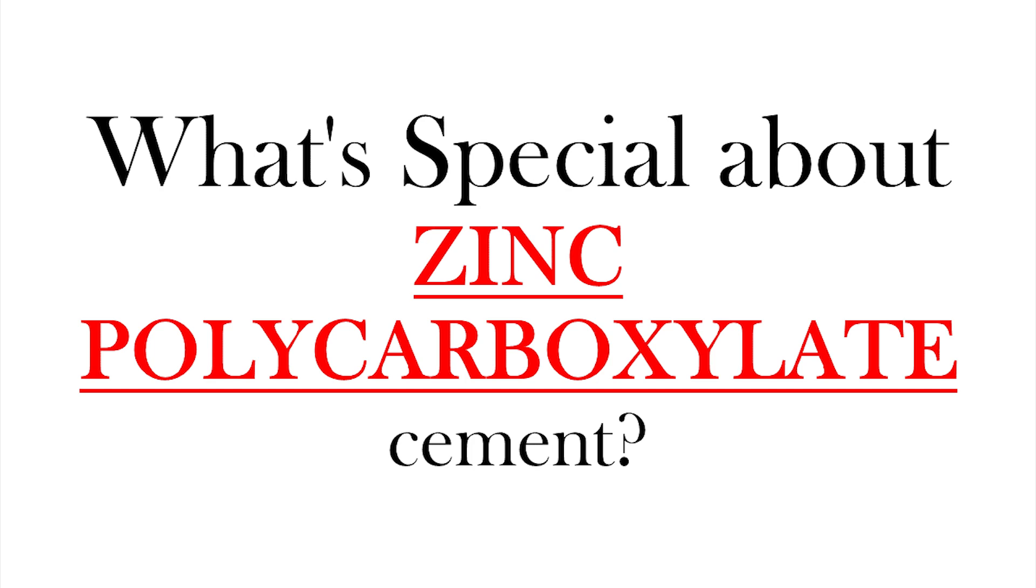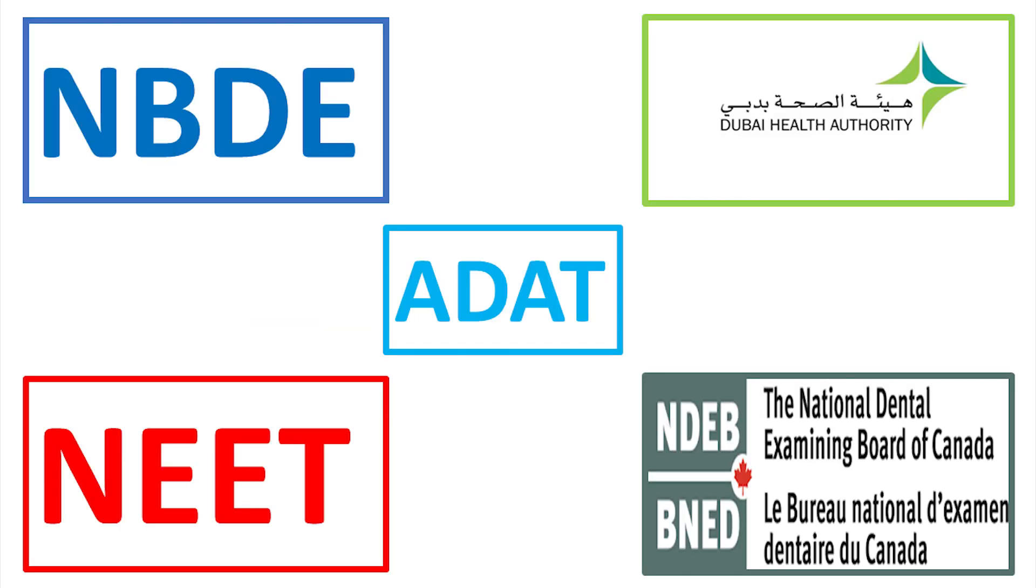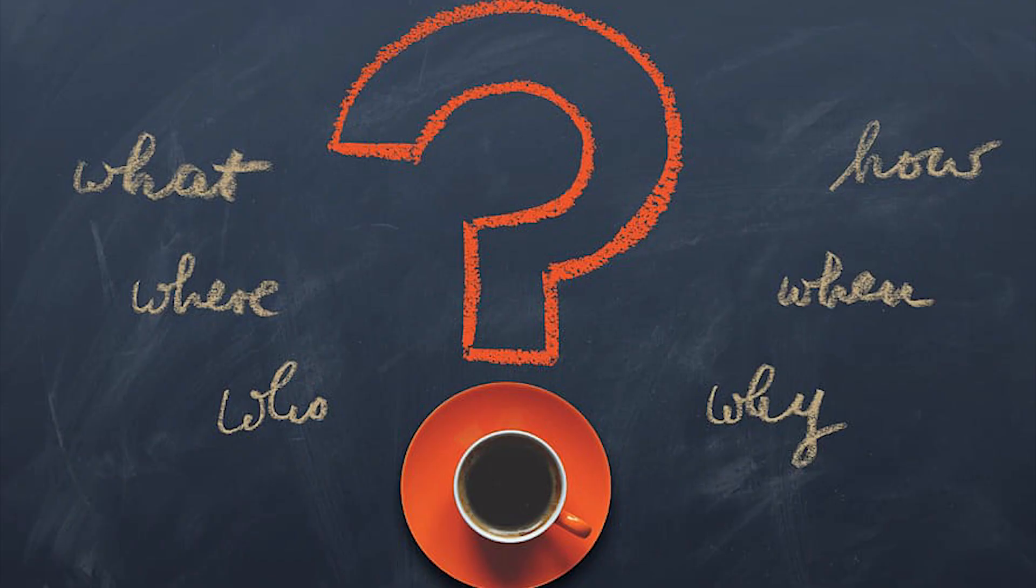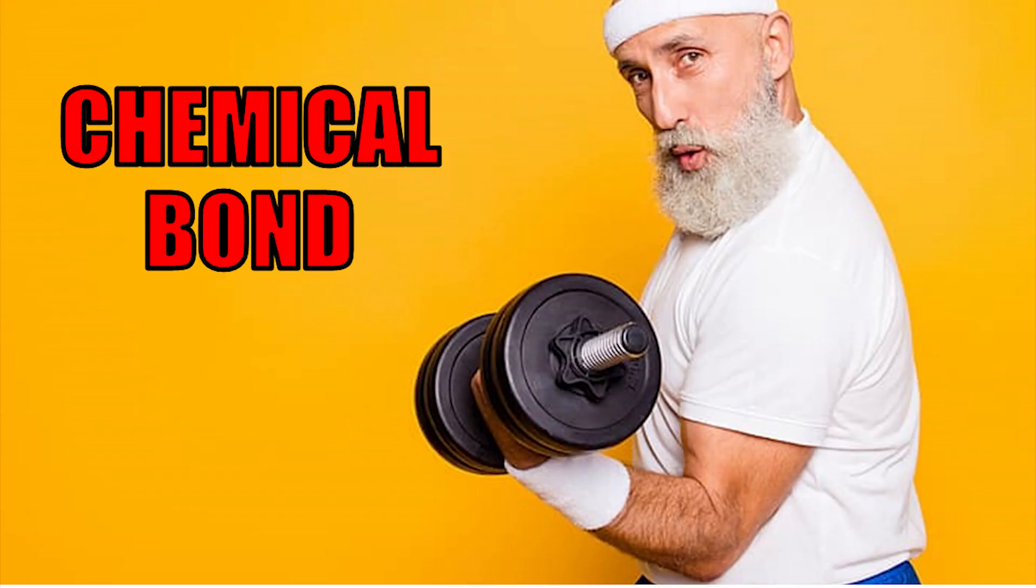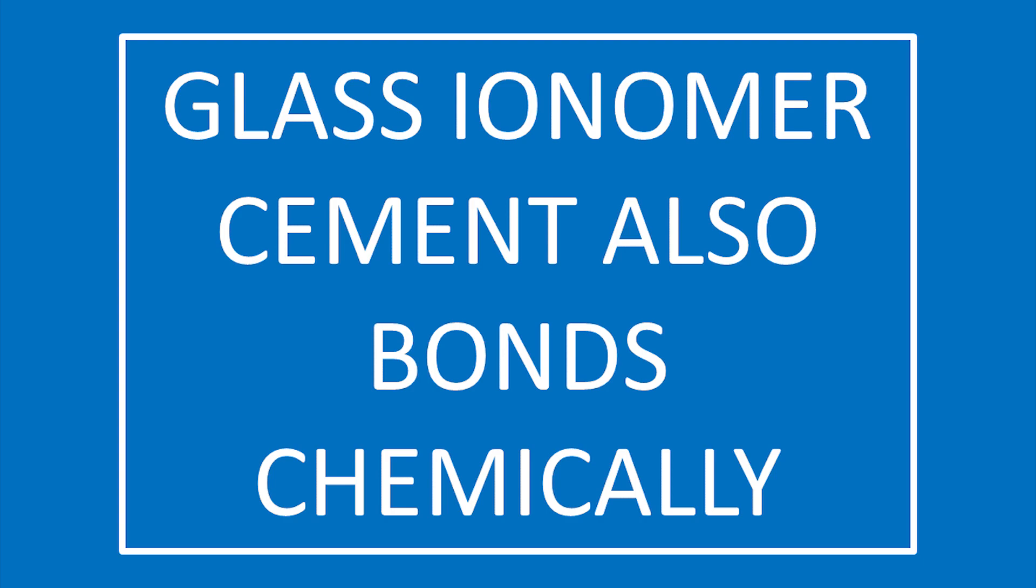Zinc polycarboxylate is very important for various exams. The obvious question is why, when we don't use it so much in our practice. That is because of one important property often asked in the exam: it was the first cement to chemically bond with the tooth structure. The other cement which can bond chemically with the tooth structure is glass ionomer cement, and that's often asked in your exam.